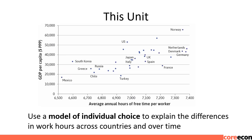In this graph, GDP per capita is measured on the vertical axis and average annual hours of free time per worker on the horizontal axis. Higher income countries towards the top of the graph seem to have more free time, but there are also some striking differences between them. For example, the Netherlands and the US have similar levels of income, but Dutch workers have much more free time, and the US and Turkey have similar amounts of free time but a large difference in income.